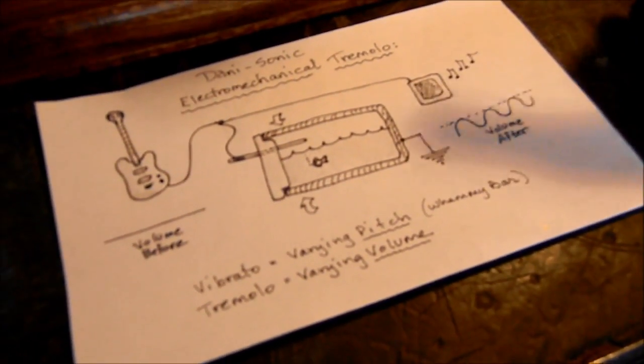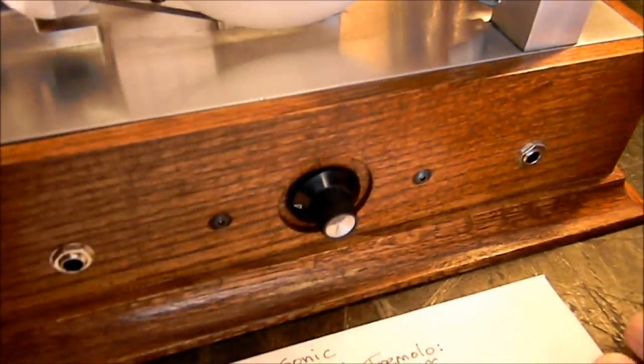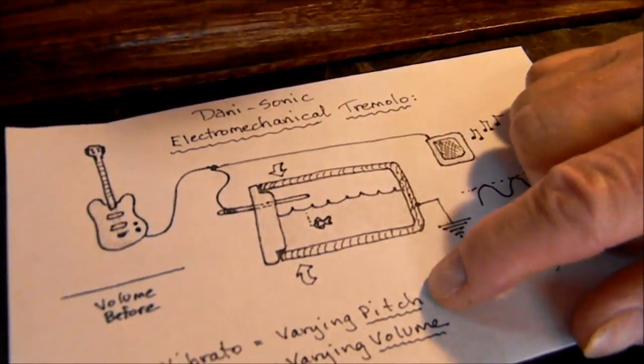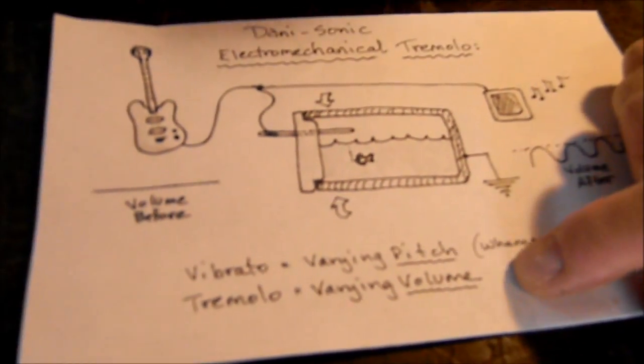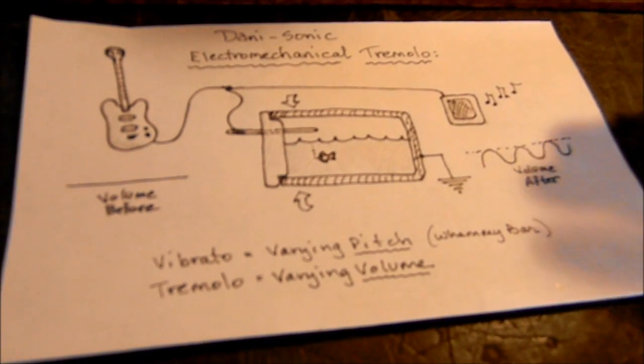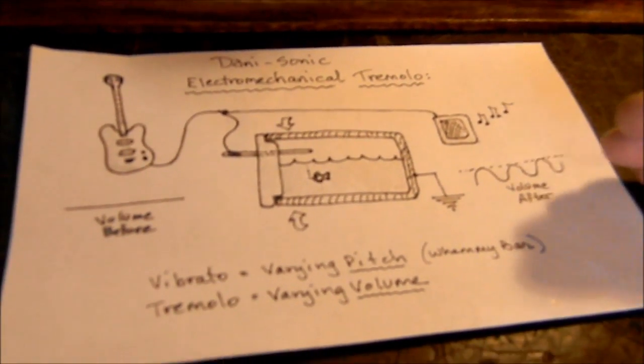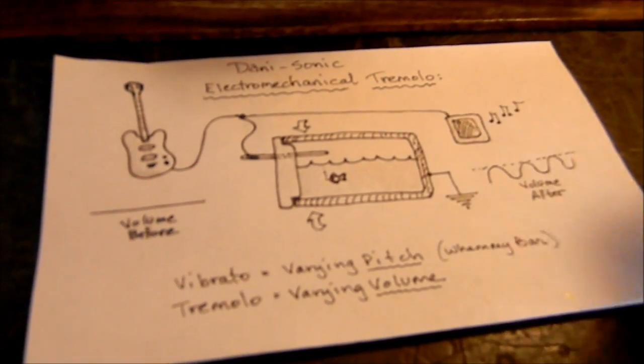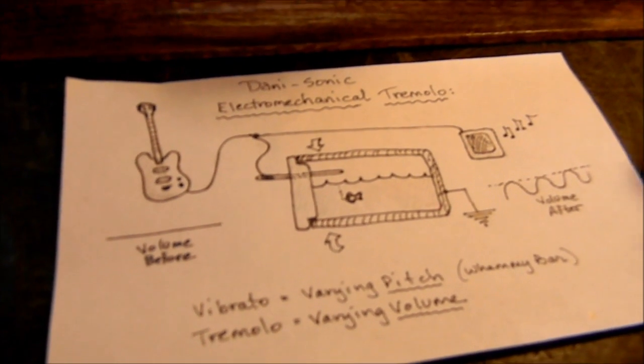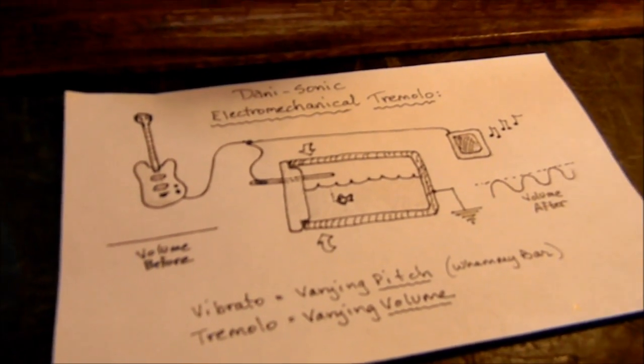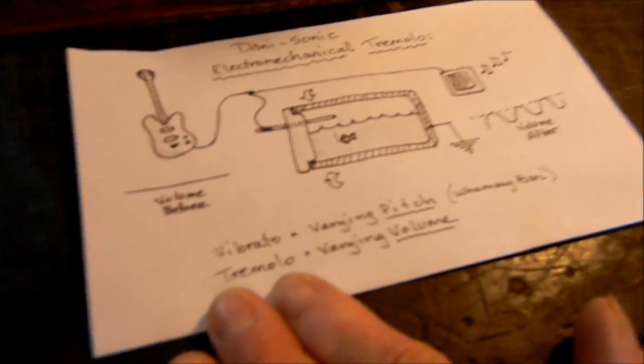The other thing that was important here is to have a variable speed control. One last thing before we turn it on, there's always this argument about what is vibrato and what is tremolo. Tremolo is when you vary the volume of a signal. Vibrato is when you vary the pitch. The most common way that's done is with the whammy bar on a guitar. You stretch the strings, make them vibrate at a different rate, and you actually change the frequency of the sound, the pitch. But I am going to be varying strictly the volume of the sound, so this really is a tremolo unit.